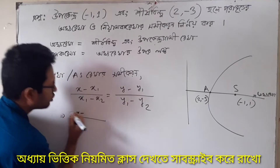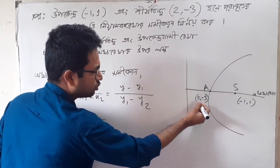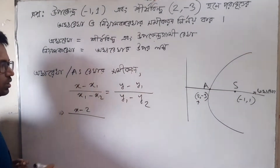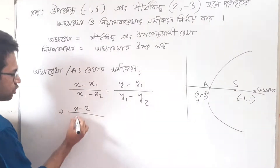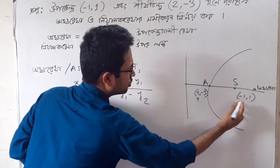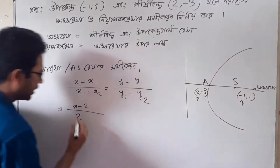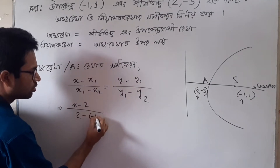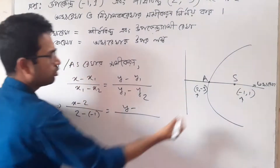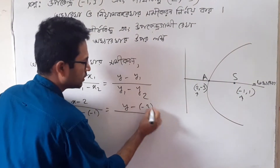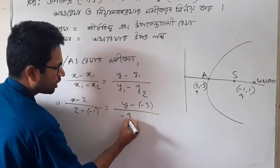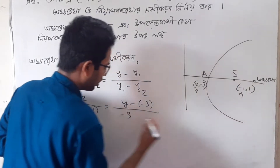So, minus x1. x1, you have to know that h2. First, x1 means 2 and x2 minus 1, equal y minus y1, y1 means 3. y1 means y2, y1 means 3 and y2 means 1.